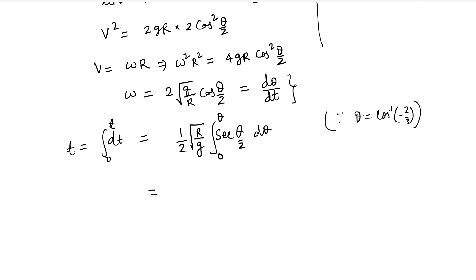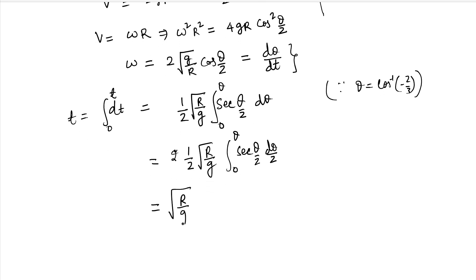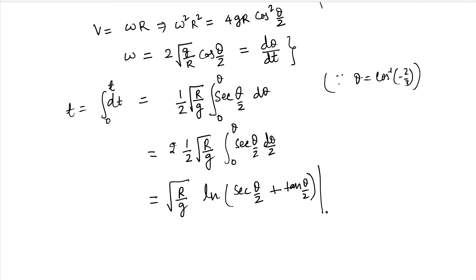So it will become 2 times 1 by 2 square root of (r by g) integral from 0 to theta of sec(theta by 2) d(theta by 2). Now this is very similar to integral of sec x dx, which we already know is ln(sec(theta by 2) plus tan(theta by 2)) from 0 to theta. In another video I have derived this, you can check that out. It will be there in the comment section or in the description section.